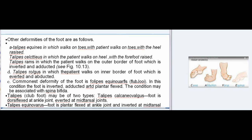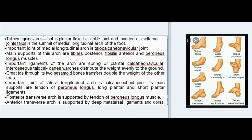Other deformities of the foot include: A. Talipes equinus — patient walks on toes with the heel raised. B. Talipes calcaneus — patient walks on heel with the forefoot raised. C. Talipes varus — patient walks on the outer border of foot, which is inverted and adducted. D. Talipes valgus — patient walks on the inner border of foot, which is everted and abducted. The commonest deformity of the foot is talipes equinovarus (clubfoot). In this condition the foot is inverted, adducted, and plantarflexed; the condition may be associated with spina bifida. Talipes equinovarus foot is plantarflexed at ankle joint and inverted at midtarsal joints.